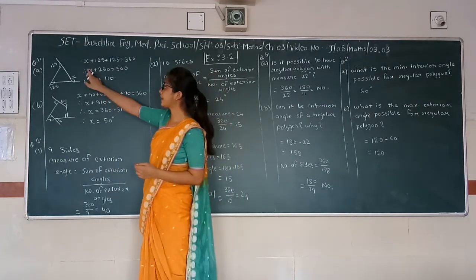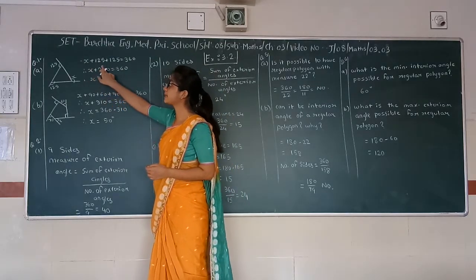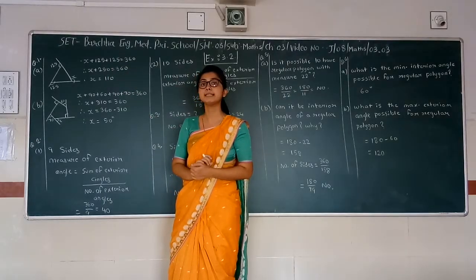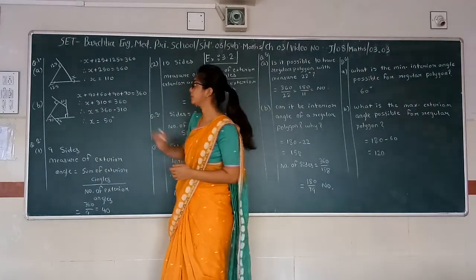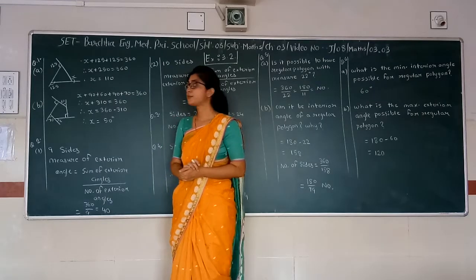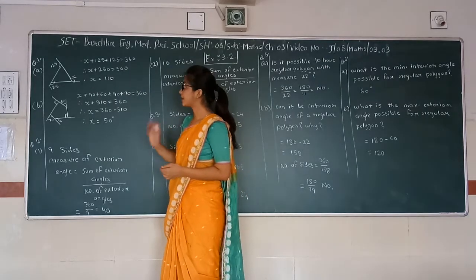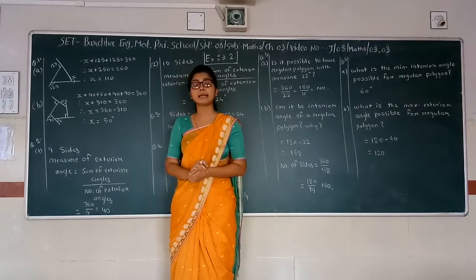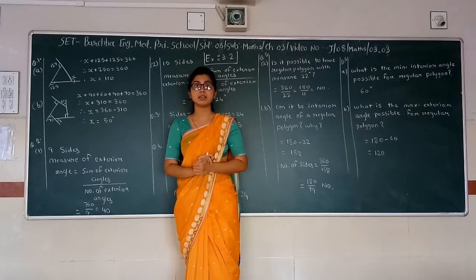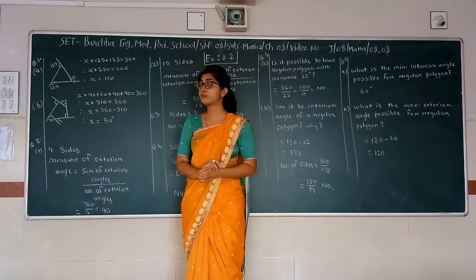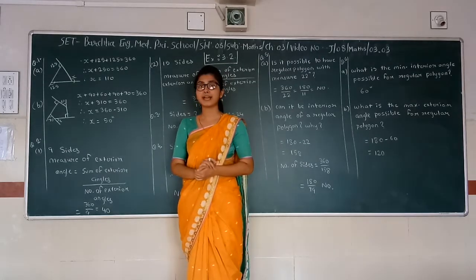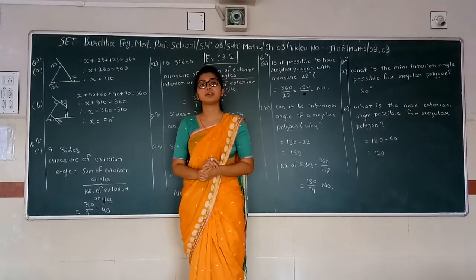Therefore, we will write x plus 125 plus 125 is equal to 360. 125 plus 125 gives 250. Transferring 250 to the right hand side, we get 360 minus 250, which is 110. So the value of x will be 110.